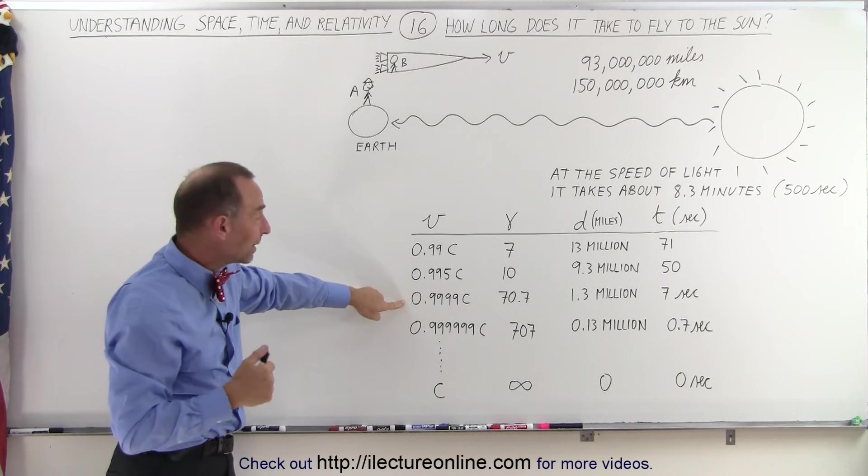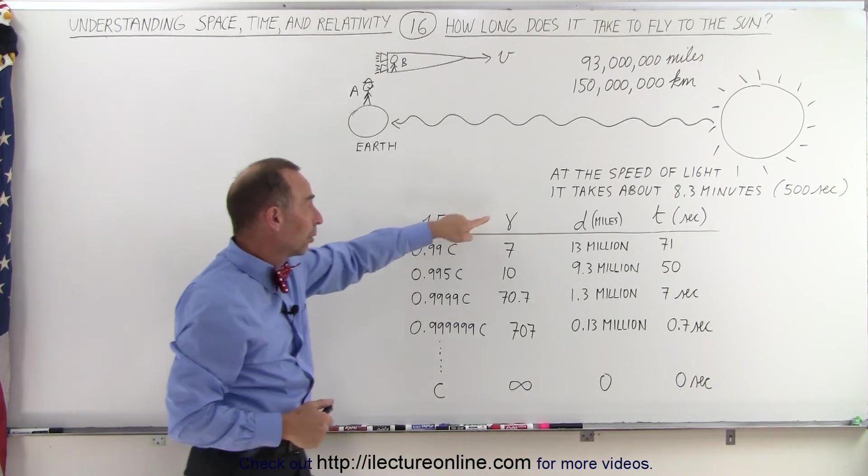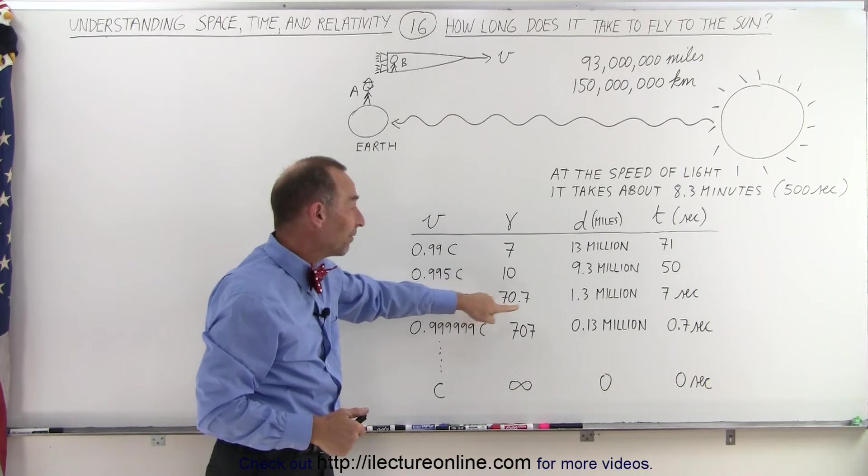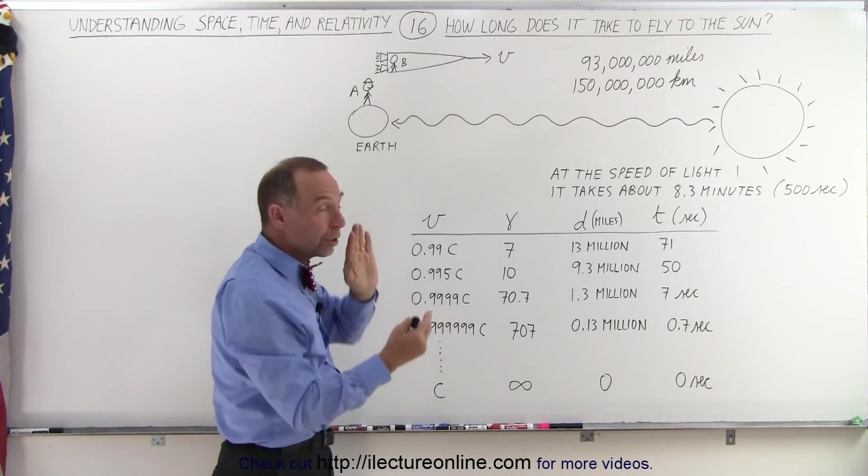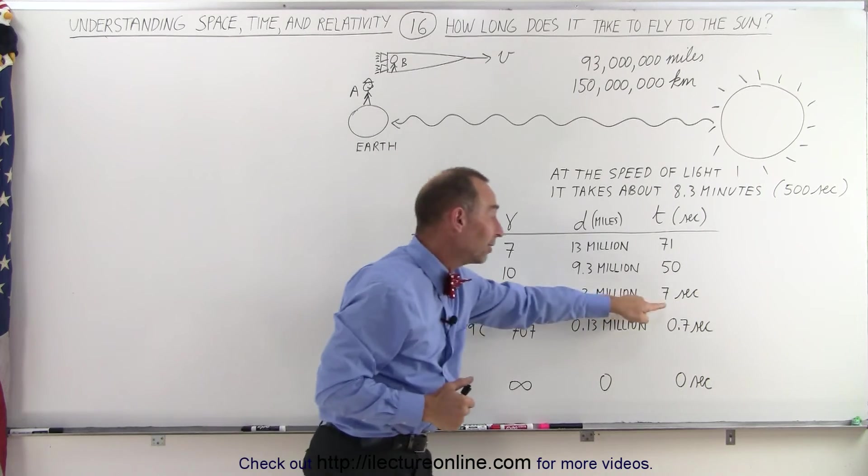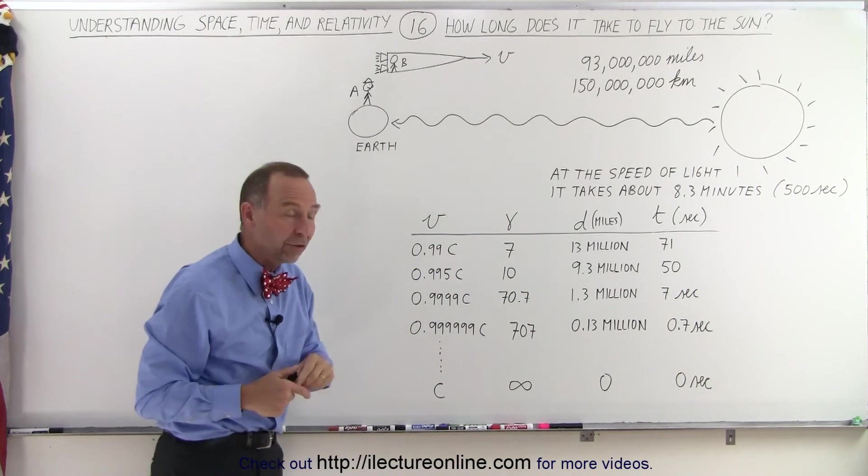Then if we speed up to 99.99% the speed of light, the Lorentz factor now becomes 70.7. The distance to the Sun now only appears 1.3 million miles, and you would get there in seven seconds at nearly the speed of light.